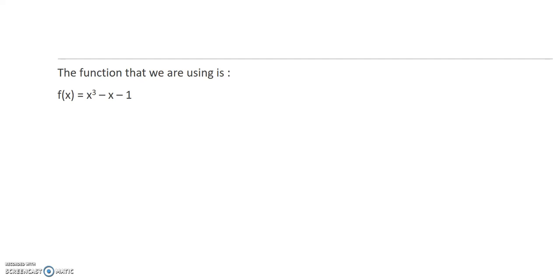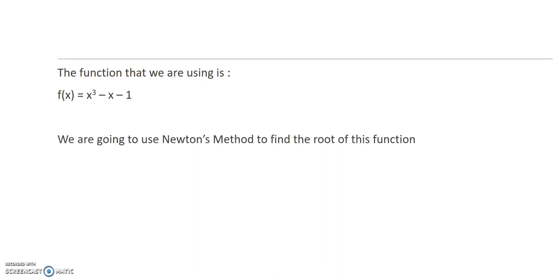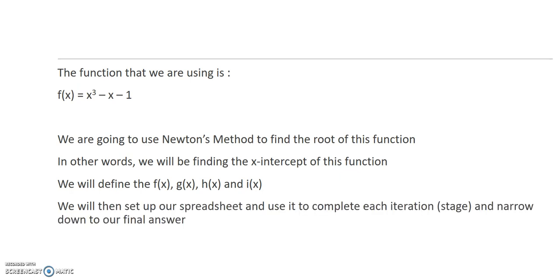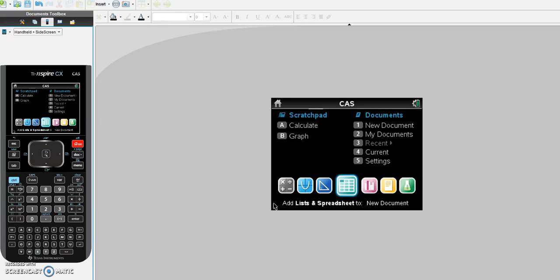The function we're using in this example is x cubed minus x minus 1. We're going to use Newton's method to find the root of this function — in a graphical sense, we're finding the x-intercept. We're going to define f of x, g of x, h of x, and i of x, then set up our spreadsheet to complete each iteration and narrow down to our final answer. Our starting value is x equals 1.